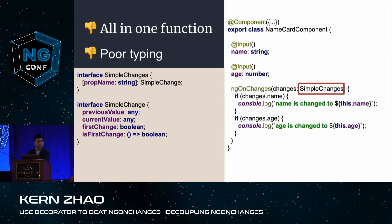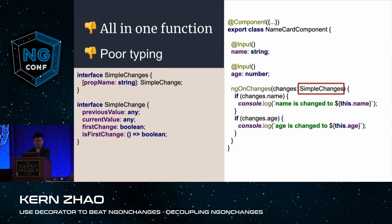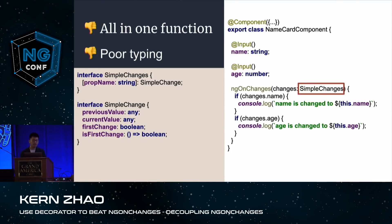Another typing issue: for SimpleChange, the previous value and current value are both typed to any. But it would be better if they could be typed to a specific type — for example, string if used for name, or number if used for age.